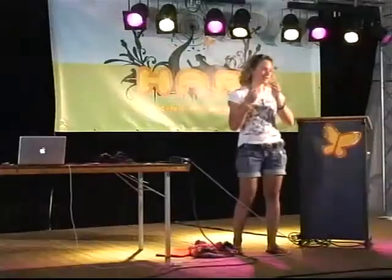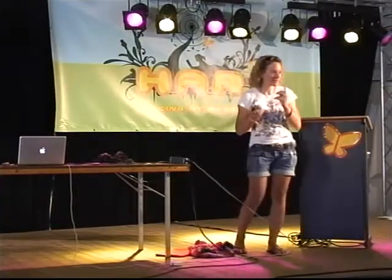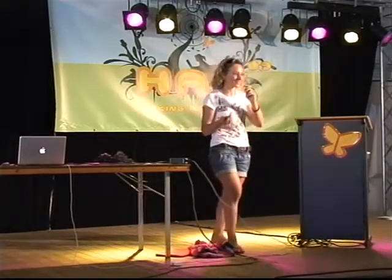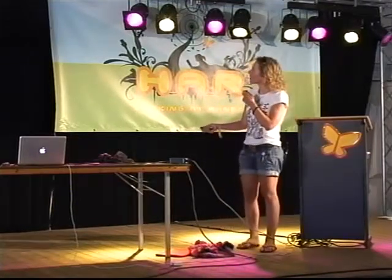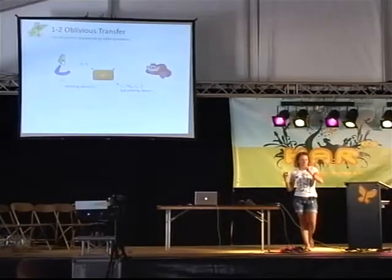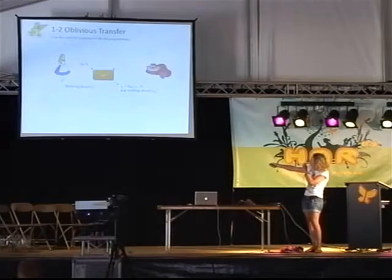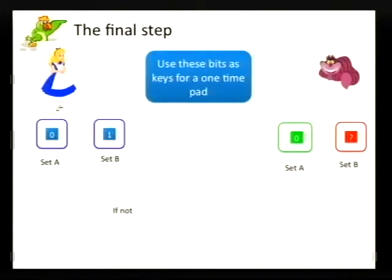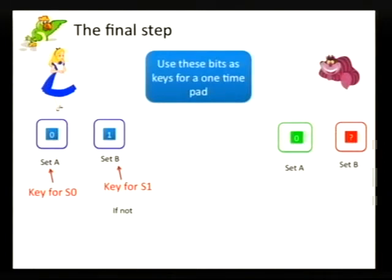To be clear, interactive hashing is actually an interactive classical protocol — they will together slowly decide how to subdivide the string, but there's nothing quantum going on. Before concluding, let me remind you what we actually wanted to do: we wanted to implement the primitive called one-out-of-two oblivious transfer, where Alice has two inputs and Bob wants to know one of them. We're going to use the strings we've now generated as a key to encrypt the information sent from Alice to Bob — this key could be used for s0 and this one for s1.